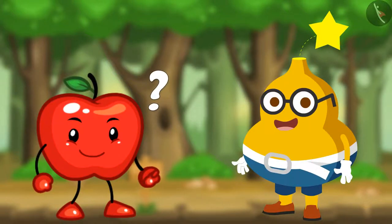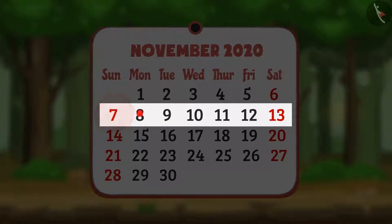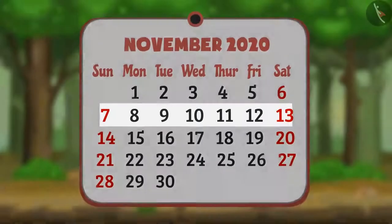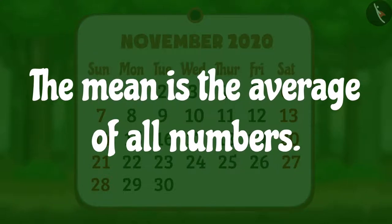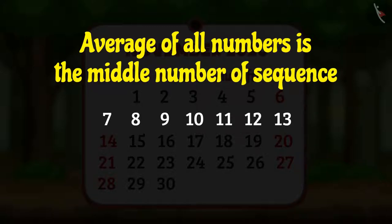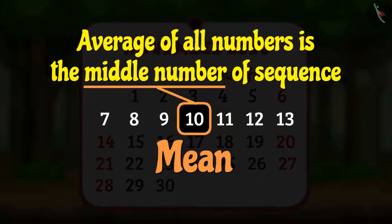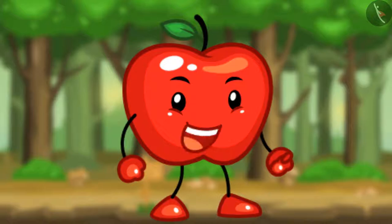Appy asks how, so Fruity says: 'As you said, the first date of the row is 7 and the last date is 13, so the row is 7, 8, 9, 10, 11, 12, and 13. The mean is the average of all numbers. The average of all numbers is the middle number of the sequence, and that is 10. Hence, 10 is the mean of this row.'